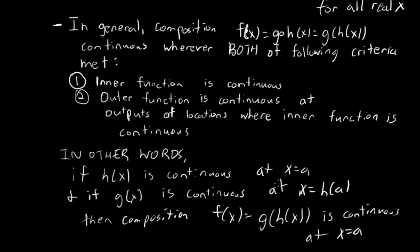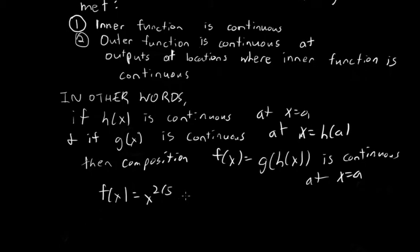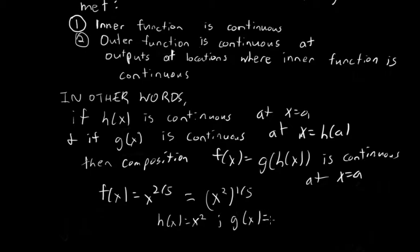If we know those two things, then we know the composition g of h of x is continuous at those points where the inner function is continuous. Back to the example: f of x equals x to the two-fifths, which can be written as x squared to the one-fifth. So h of x equals x squared and g of x equals x to the one-fifth.